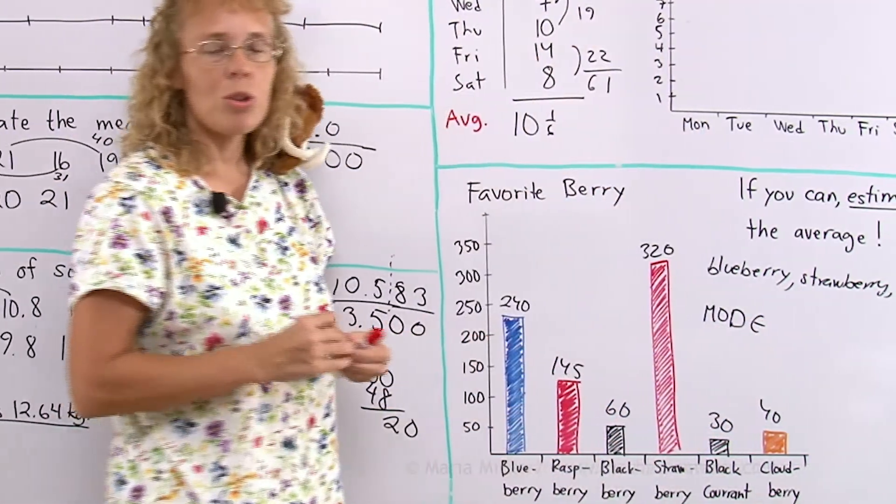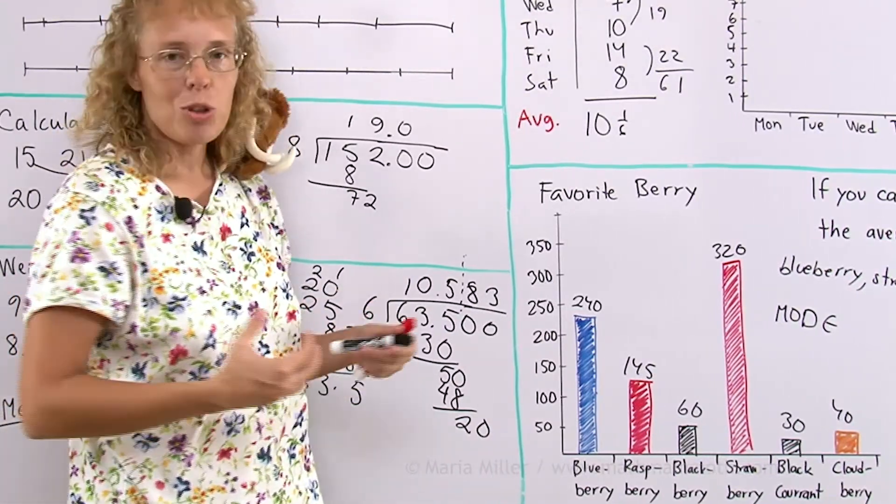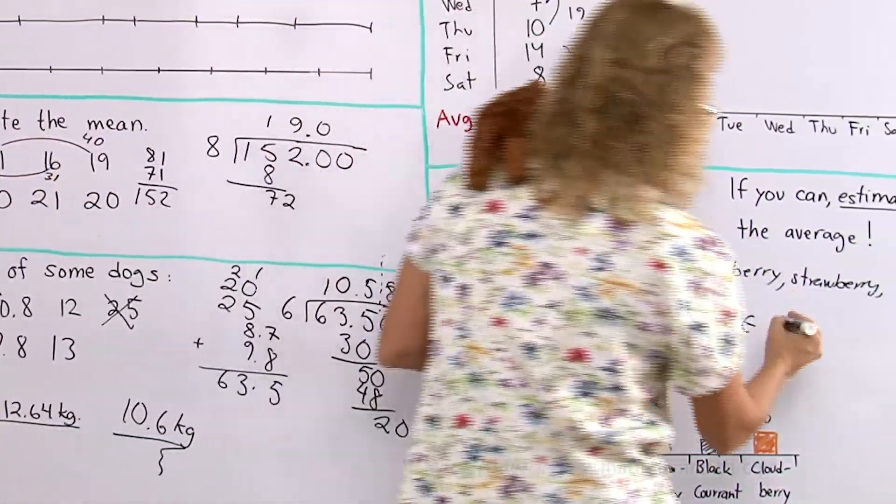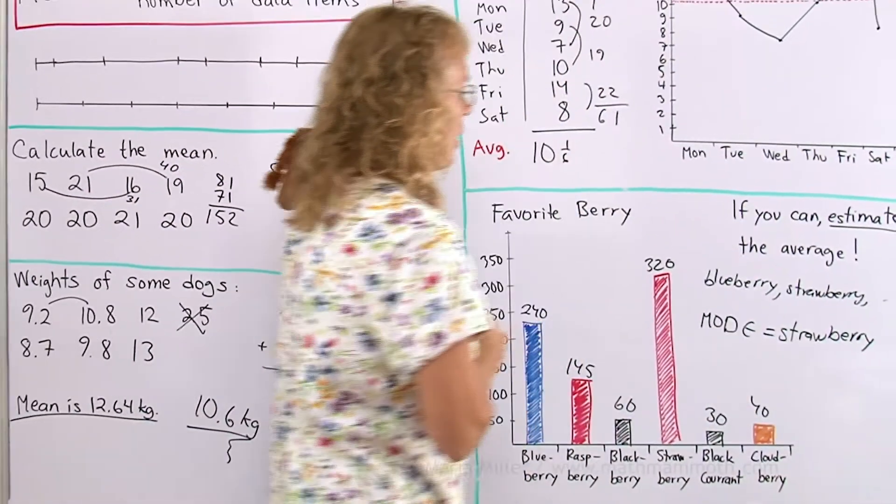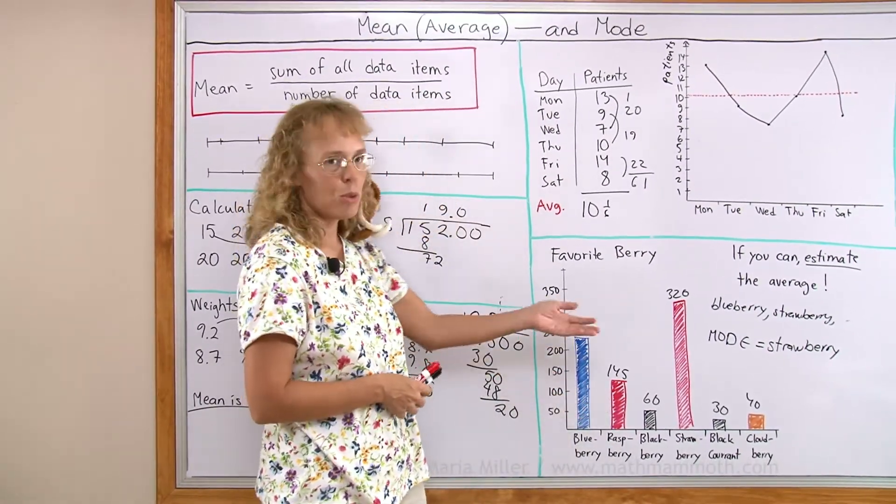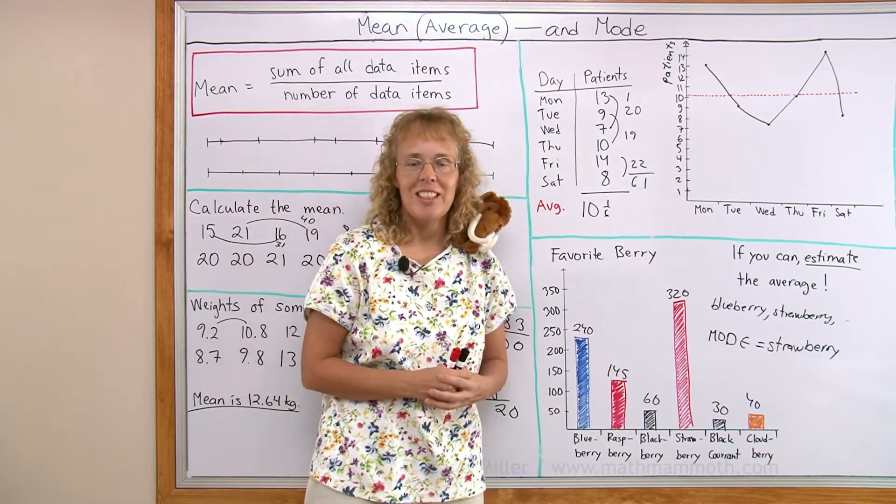But we can figure out the mode. Mode is the most frequently occurring data item. Whatever was most popular, so to speak. In this case it is strawberry. But that's all we can do. We can make a bar graph and we can figure out the mode. But we cannot calculate the mean or the average in this case.